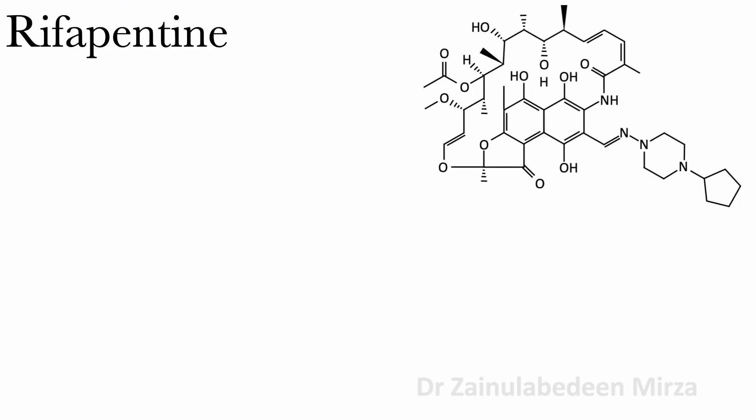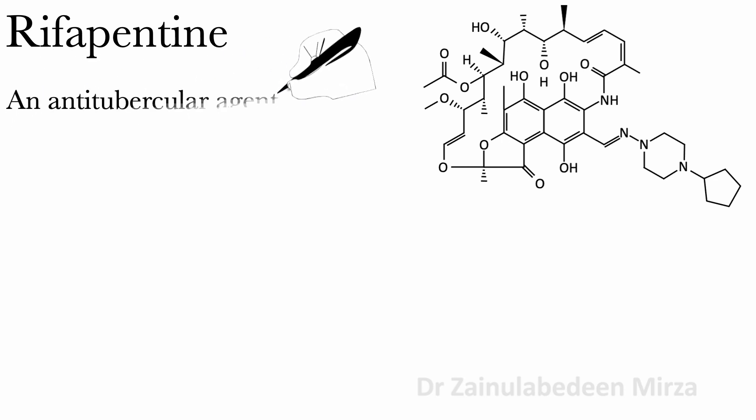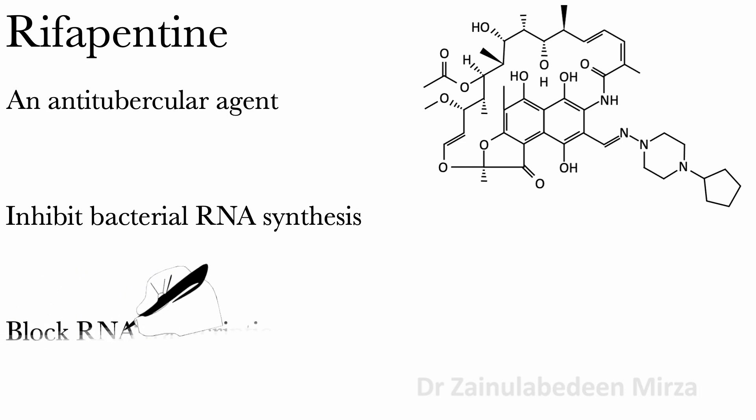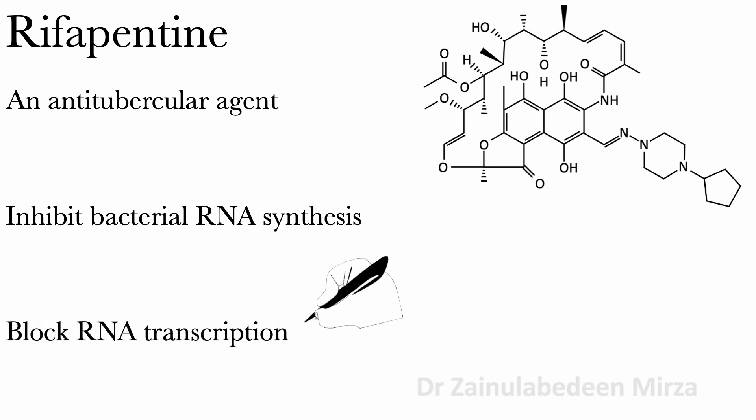Rifabutine is an antitubercular agent that inhibits bacterial RNA synthesis, by binding to DNA-dependent RNA polymerase in Mycobacterium tuberculosis. This prevents the enzyme from attaching to DNA, thereby blocking RNA transcription.